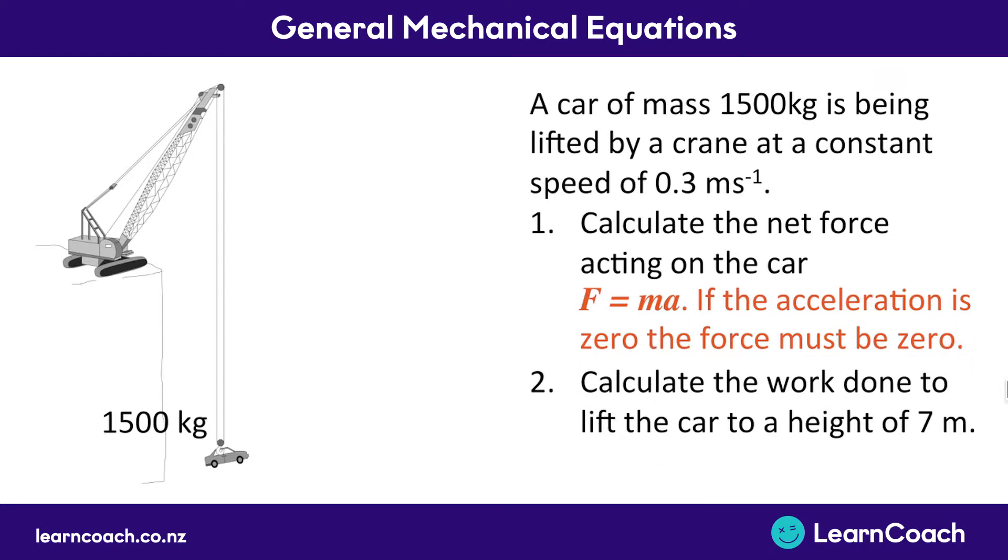Now the second part to this question is we need to calculate the work done to lift the car to a height of seven meters. If we look at the formula for work, we know it's force multiplied by distance. But in order to find out the work, we need to understand the force involved first. Looking for a formula for force when we're lifting, is force equals the mass of the car multiplied by the effect of gravity. Now that we know this formula, we can substitute in the mass of the car, multiply that by gravity, and that's going to give us the overall force that we need to use to lift the car. So we can substitute this into our formula, the force of 14,700 we just calculated, multiplied by the seven meter distance that we get lifted. And that gives us a final work of 102,900 joules.